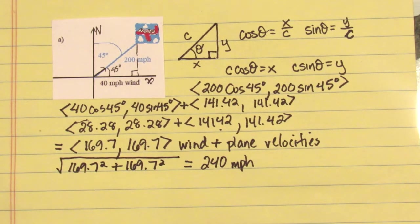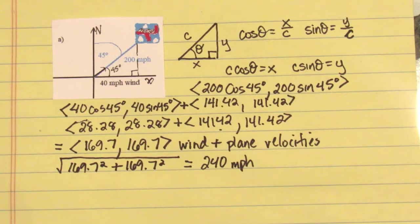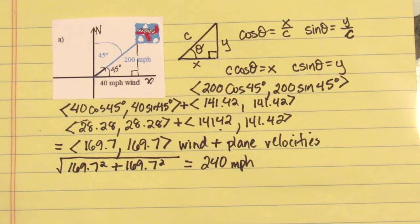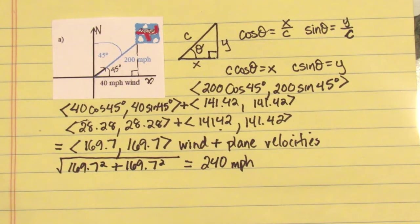Headings are angles measured from north, so we're measuring from the y-axis. Because it's 45 degrees, notice the angle from the x-axis is also 45. 45 plus 45 is 90.